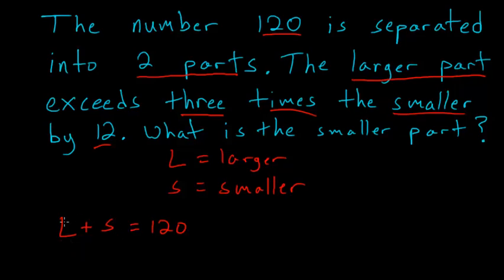We have two variables and only one equation right now, so the only way to solve this is with a second equation. In the next sentence, we get our second equation. The larger part exceeds three times the smaller part by 12. In other words, the larger part L is three times the smaller part and 12 more than that, so L equals 3S plus 12.